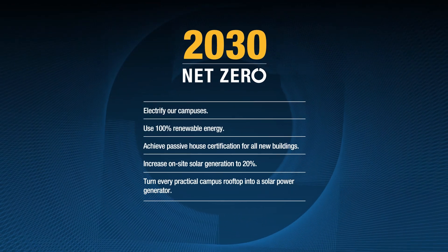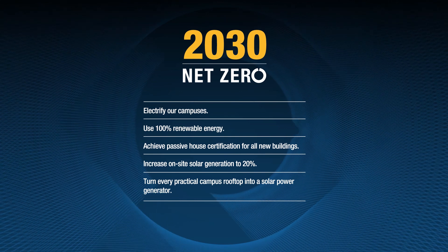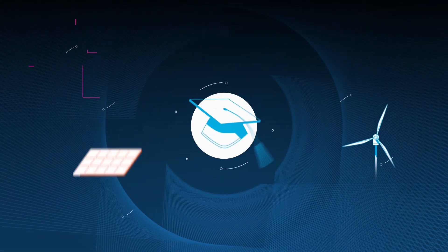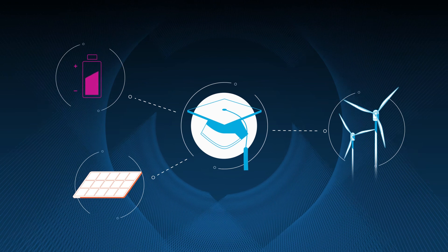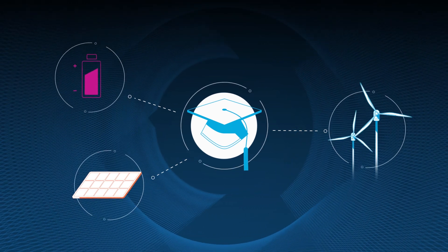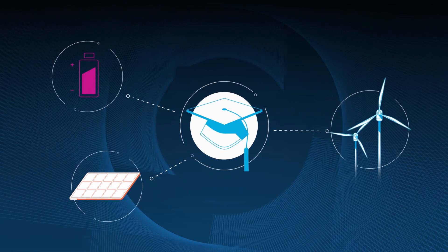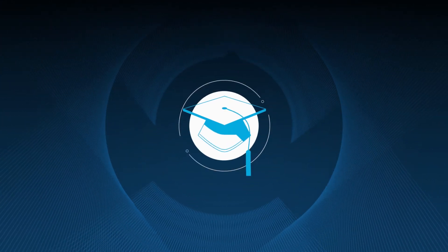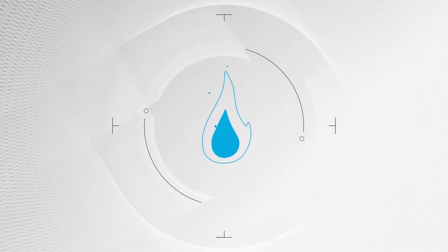Our goal is clear, and we have a concrete action plan for how we're going to achieve it. We're building an on-site microgrid to manage how we use energy effectively, investing in renewable energy generation, and electrifying our campuses to end our dependence on natural gas.